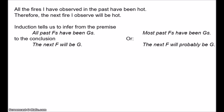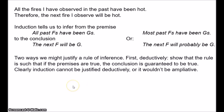The argument against induction is simple. In principle, there are only two ways that we might justify a rule of inference. First, we might try to justify a rule deductively — we might try to show that the rule guarantees that if the premises are true, then the conclusion is true also. But clearly, induction can't be justified deductively, or it wouldn't be ampliative. The fact that all past observed fires have been hot doesn't logically entail that the next fire will be hot. It's possible that the next one will be cold — we just happen to have observed the hot ones. The belief that the next fire will be hot goes beyond what has been demonstrated by experience, and that's something you can't get from deduction.